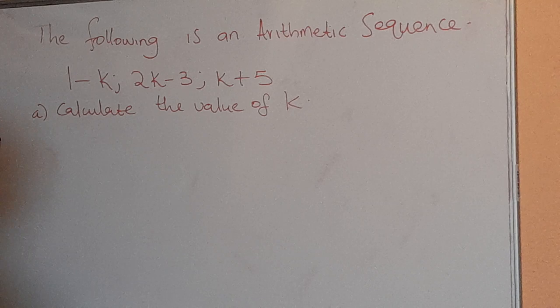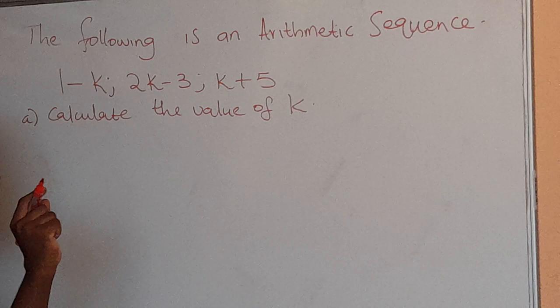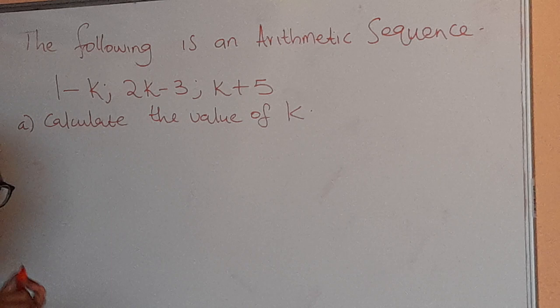Since this is an arithmetic sequence, in order for us to find the unknown value of k, we're going to use the formula of common difference, which is t2 minus t1 equals to t3 minus t2.